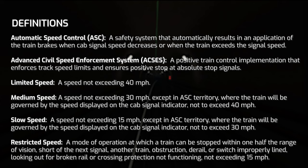Advanced Civil Speed Enforcement System, also known as ACCESS, is a positive train control implementation mandated by the Federal Railroad Administration that enforces track speed limits. So on a straightaway, if it's 70 miles per hour, ACCESS will enforce 70 miles per hour. It also ensures that trains come to a complete stop before a home signal displaying stop.